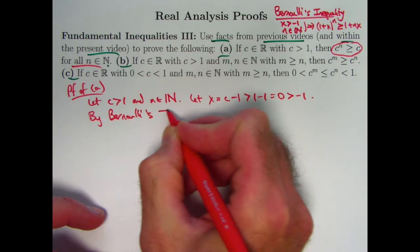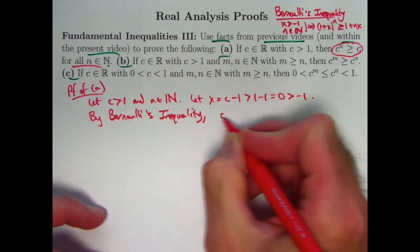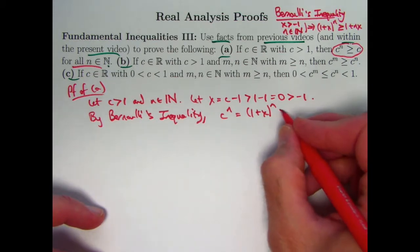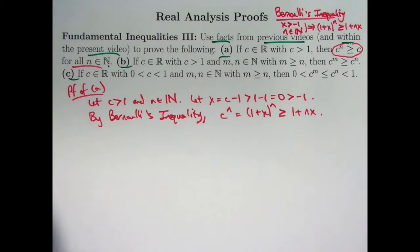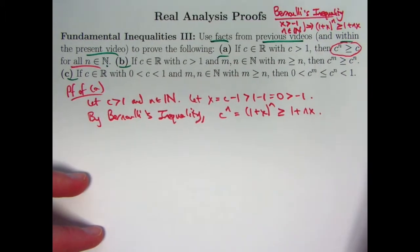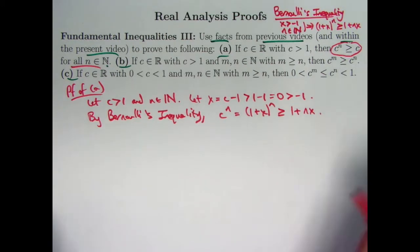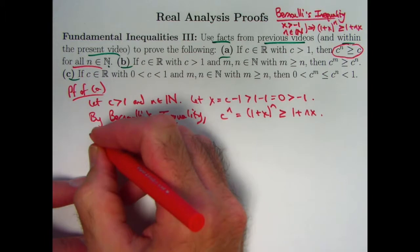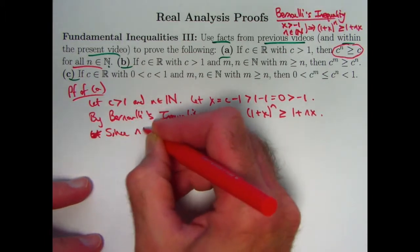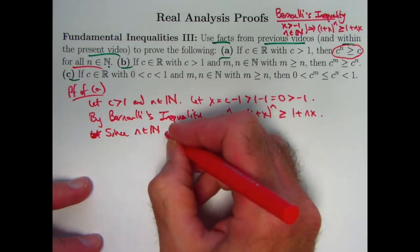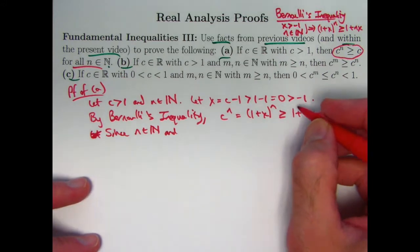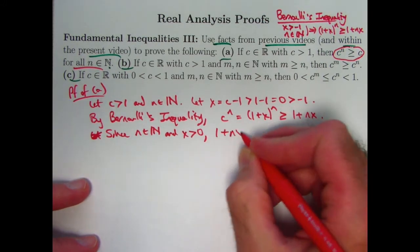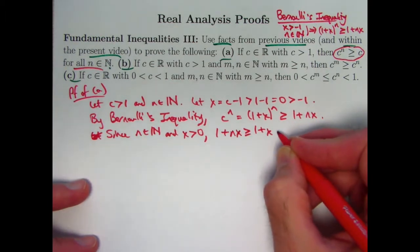By Bernoulli's Inequality, c^n, which is the same as (1+x)^n since x is c - 1, is greater than or equal to 1 + nx. How is that related to c itself? It doesn't equal c. c is 1 + x. You might be tempted to right away write down that this is greater than or equal to 1 + x, but wait a minute. You shouldn't rush too fast. You should say why. It is important that n be a positive integer. And it's also important that x is positive, bigger than zero. Those two facts imply that 1 + nx is greater than or equal to 1 + x, which equals c.